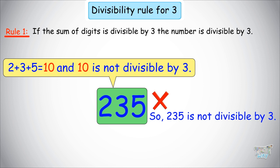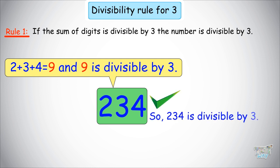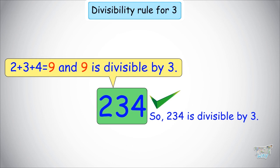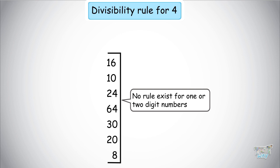So friends, isn't it easy to find out whether or not a number is divisible by 3? You just have to add up the digits, find the sum, and see whether that is divisible by 3. If it is, your number is also divisible by 3. We have now learned how to find whether a number is divisible by 2 or 3. Now let's learn how to find out if a number is divisible by 4. In the case of 4, there is no rule for numbers that have 1 or 2 digits.